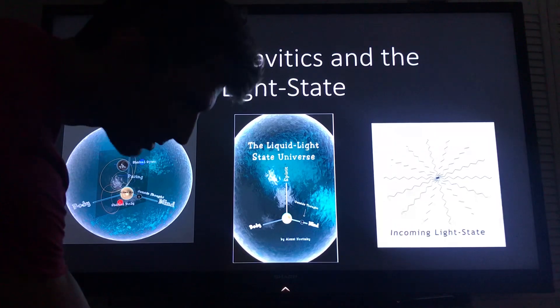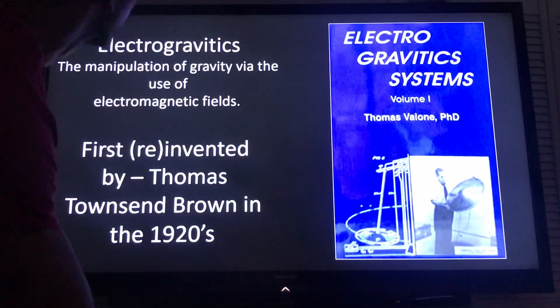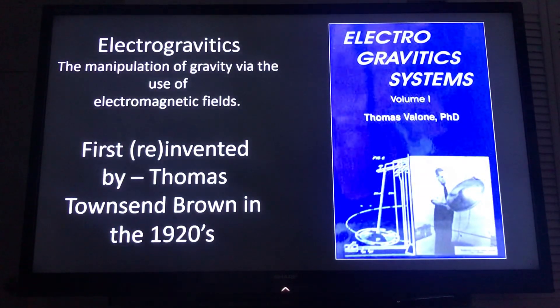So the very first thing we're going to do is introduce electrogravitics because some people haven't heard of this. This was invented by Thomas Townsend Brown in the 1920s and it's a way to manipulate gravity through the use of electricity in electric fields.